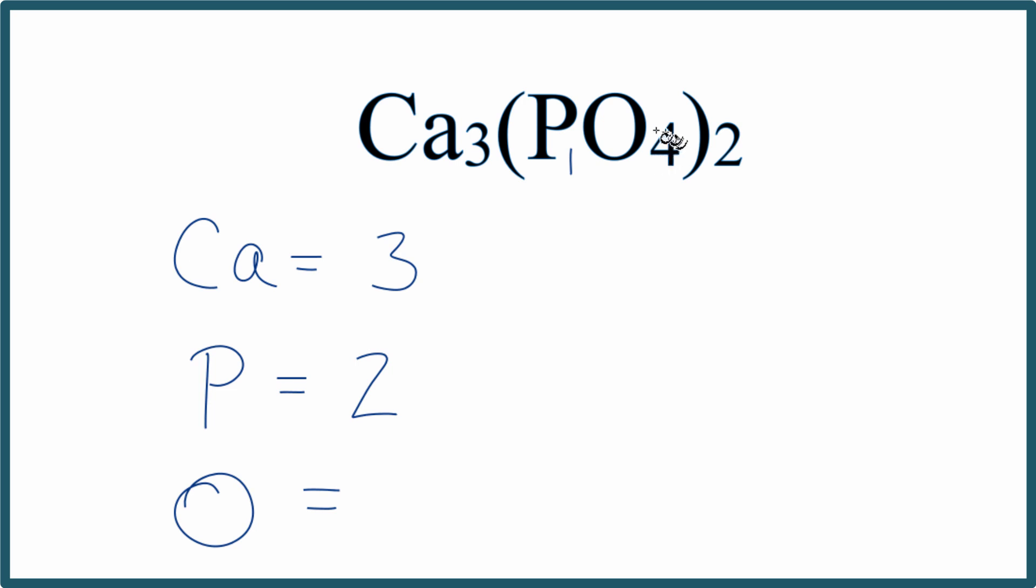The oxygen, we have four times two, so that gives us eight oxygen atoms. The total number of atoms in this calcium phosphate compound here would be eight plus two plus three, so that would be 13.